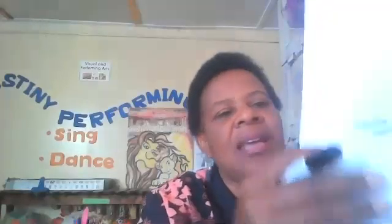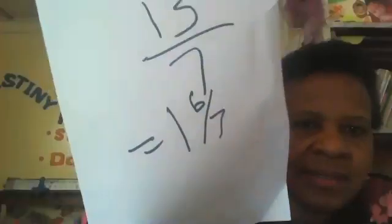The answer is one and six sevenths. We divide seven into eighteen — it goes once, remainder six over seven. Can you see that?